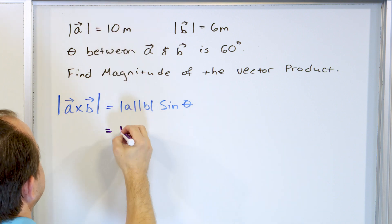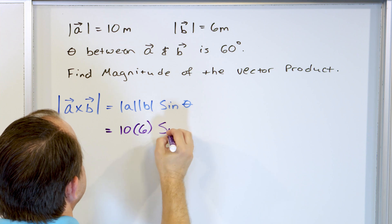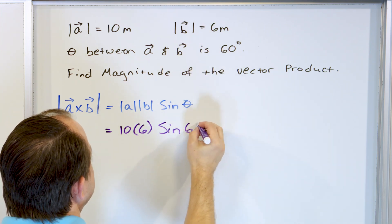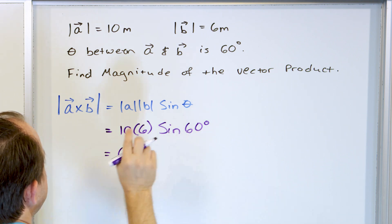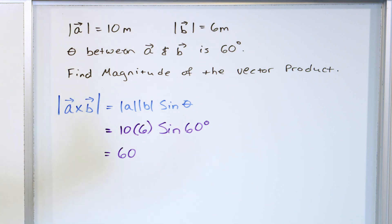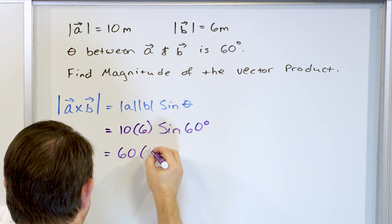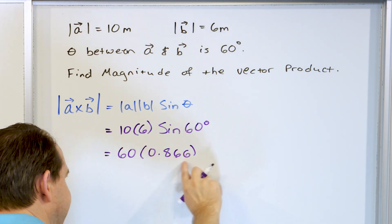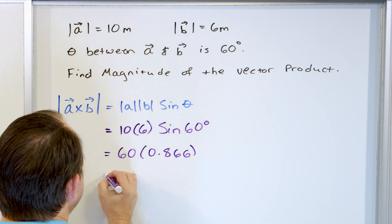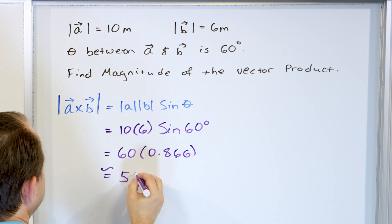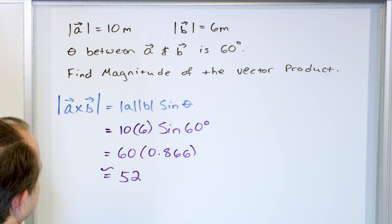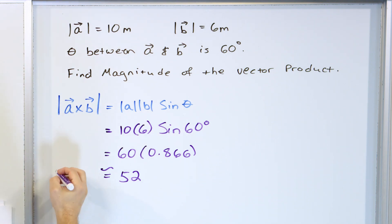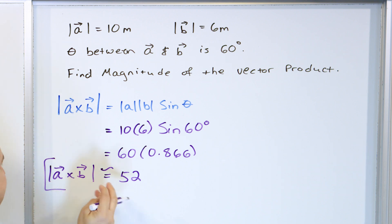The length of vector A is 10, the length of vector B is 6, and the sine of the angle between them is sin(60°). If you take 10 times 6, you get 60, and sin(60°) is √3/2, or approximately 0.866. When we calculate this, we get approximately 52 — the exact value is very close to 52. This is the magnitude of vector A cross with vector B, telling us the length of the resulting arrow.